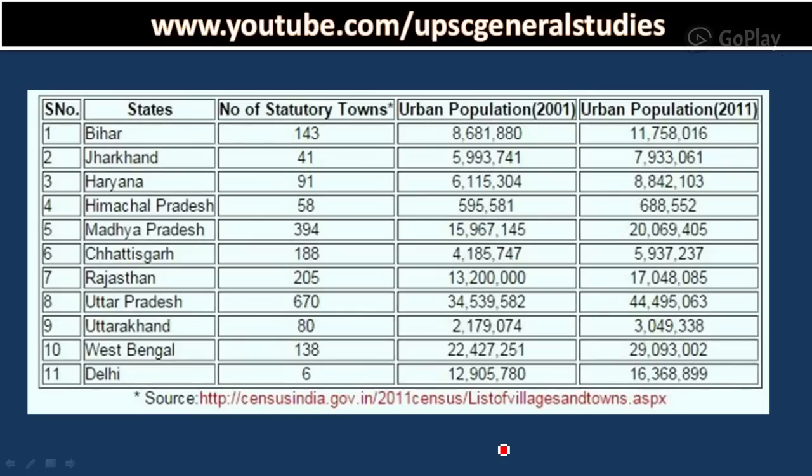Another thing is the population pressure on the river. If you look at the 11 states and the major statutory towns and their population, it comes to know that there is huge pressure on the river. In Bihar, we have 143 statutory towns and the population was 86 lakh in 2001. It increased to more than one crore after 2011.